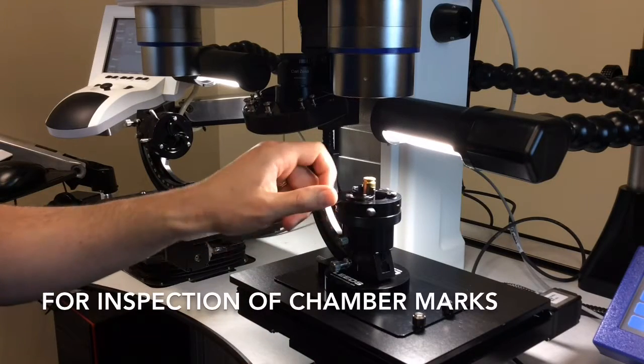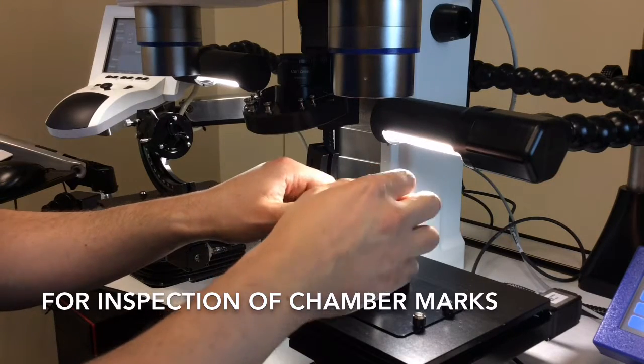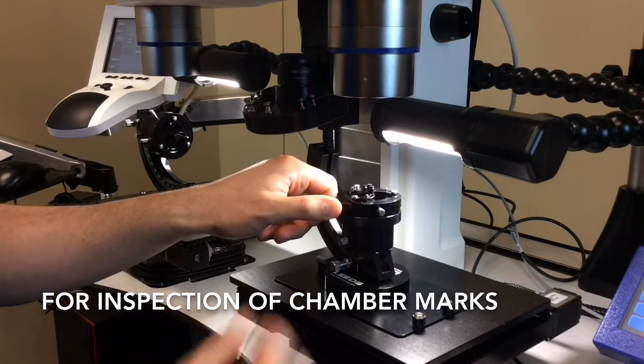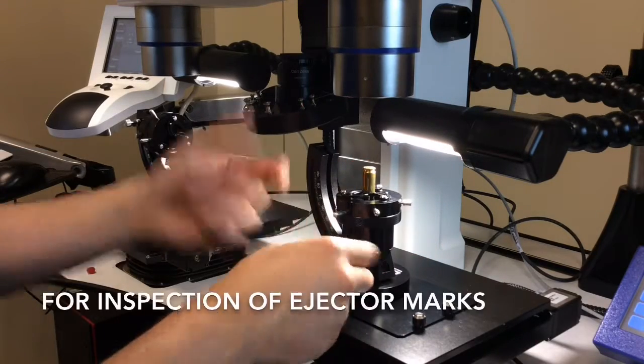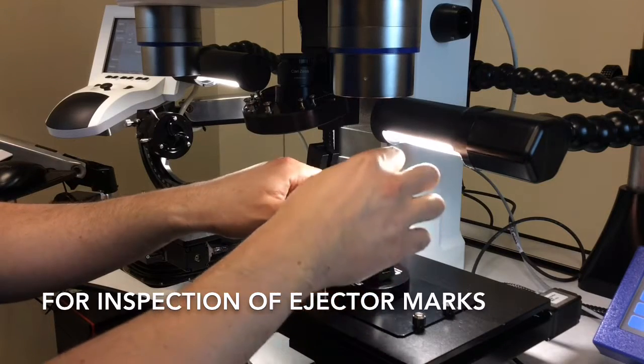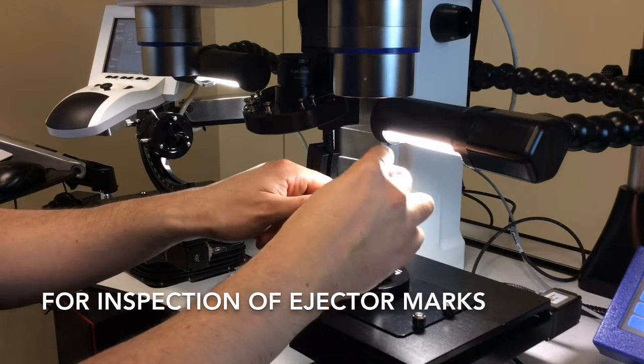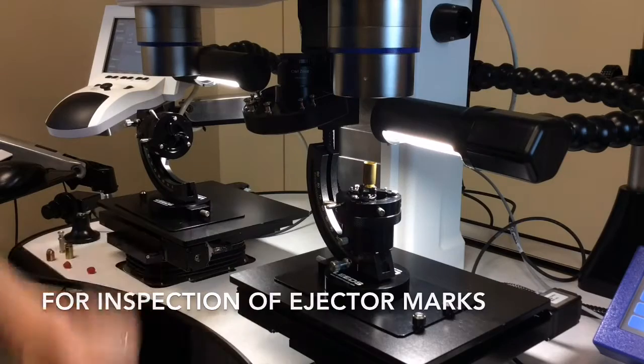So in this case, I'm holding it from the outer diameter, but if I wanted to, I could pinch and spread it out and hold it from the inner diameter by locking this pin here. And then if I would like to as well, I can actually just open the holder and hold it from the extractor groove right here.